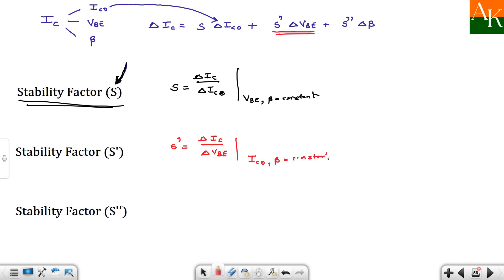And the last one is nothing but S double dash. S double dash calculate karne ke liya aapko ye factor consider karna padega and for that purpose what will be the definition, delta IC divided by delta beta.